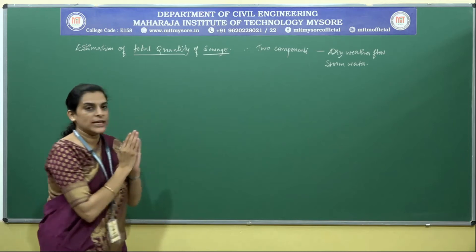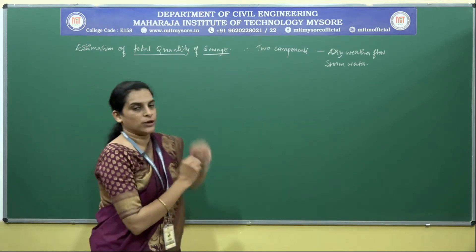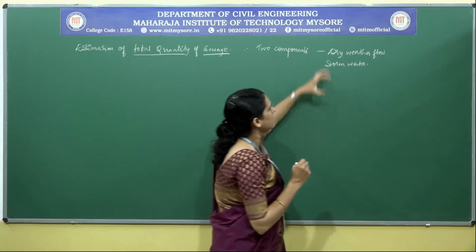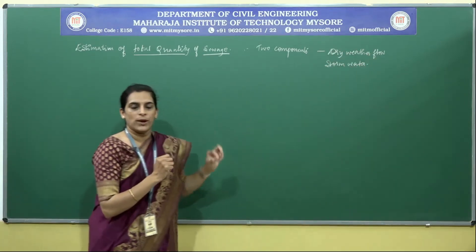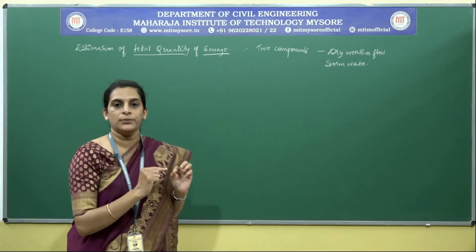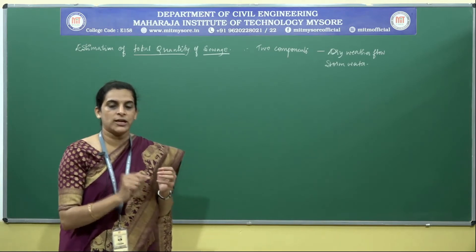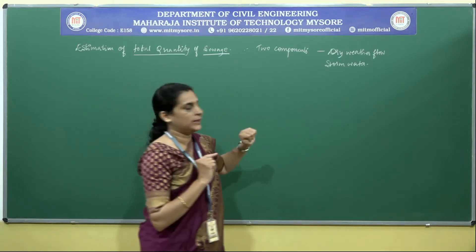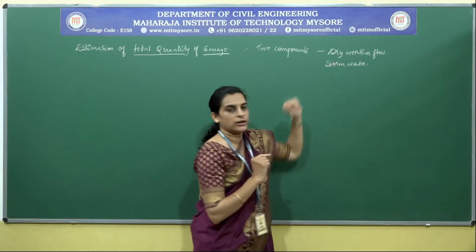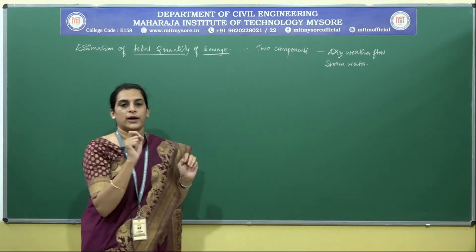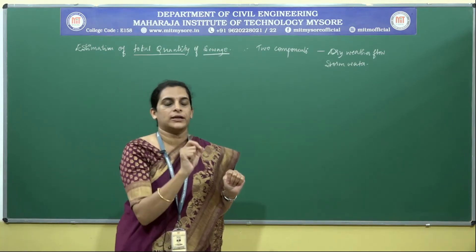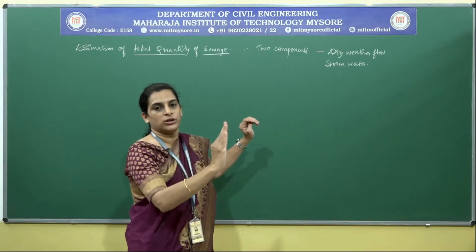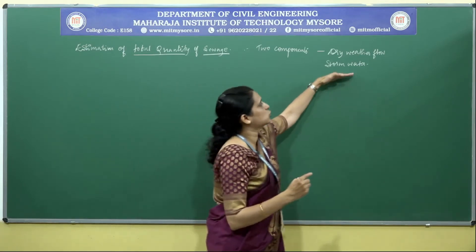These two components together comprise the total quantity. Dry weather flow refers to all the sewage arising from a community which includes residential, industrial, commercial, institutional, and private or public property. Stormwater is the runoff or rainwater from a particular locality which joins the sewer and moves on to the final disposal through the sewer.